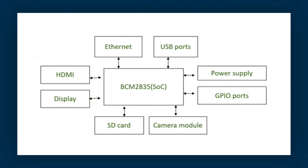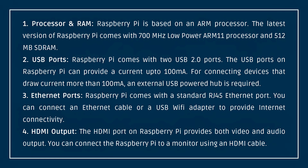Now let's check out the main components in Raspberry Pi. The first one is Processor and RAM. Raspberry Pi is based on an ARM processor. The latest version comes with a 700 MHz low-power ARM11 processor and 512 MB RAM. Next, USB ports — Raspberry Pi has 2 USB 2.0 ports, which can provide up to 100 mA. If you need more current, you can connect a USB-powered hub.